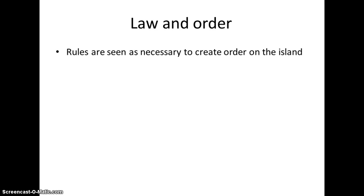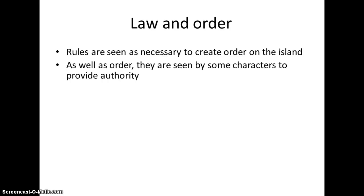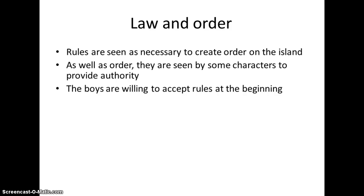Starting with law and order — we see there are lots of rules throughout the novel that are created, and they are shown to be necessary to create order on the island. Rules are shown to be necessary in society for a society to function properly and to be civilised. As well as order, they are also seen by some of the characters to provide authority.